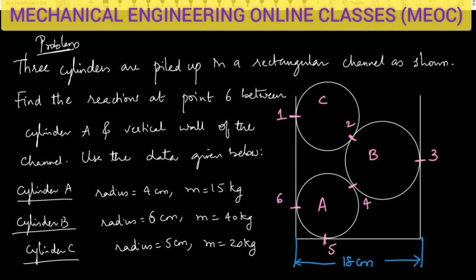The channel width is given as 18 cm. For all the cylinders, the radius and mass of each cylinder are also given. The points of contact are already named: C is in contact with the vertical wall at point 1, B to C contact point is 2, B is in contact with the vertical wall at 3, A to B contact point is 4, and A touches the horizontal at 5 and the vertical wall at 6. We need to find the normal reaction from the contact surface at point 6.